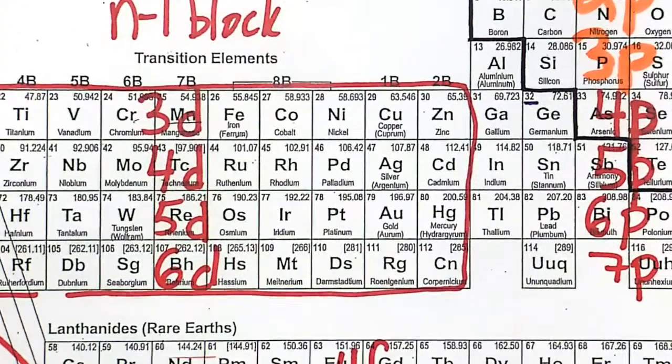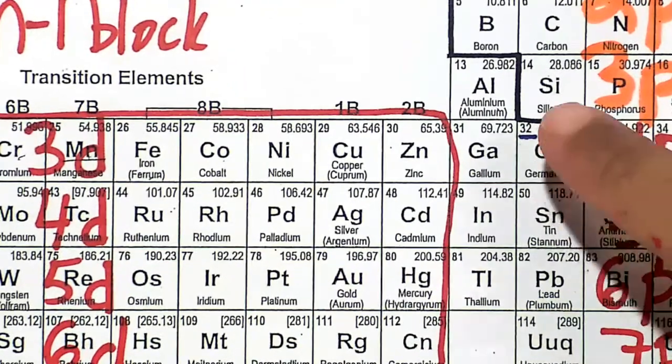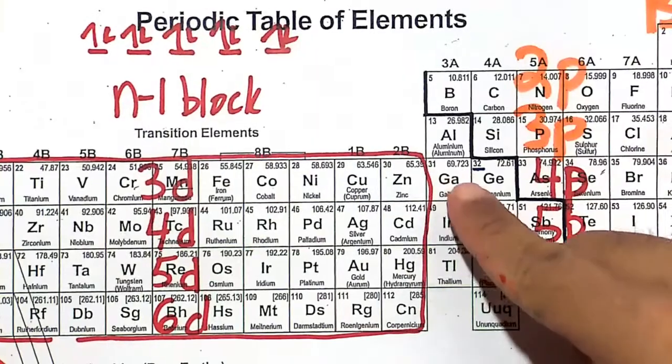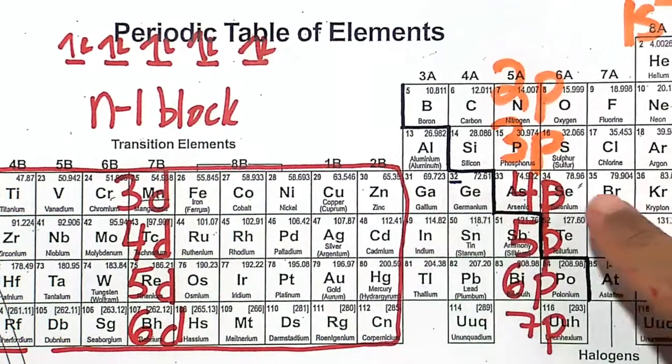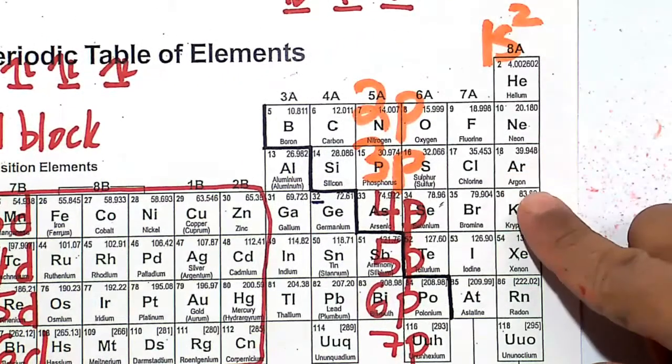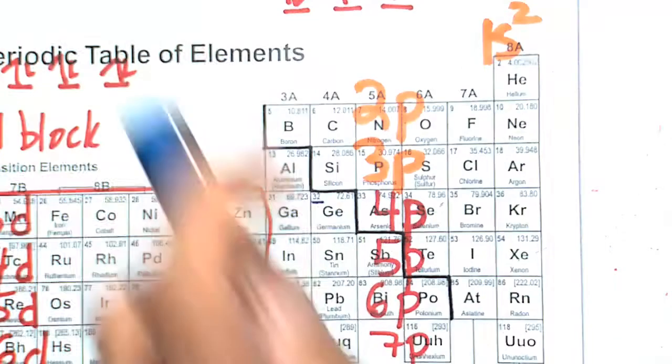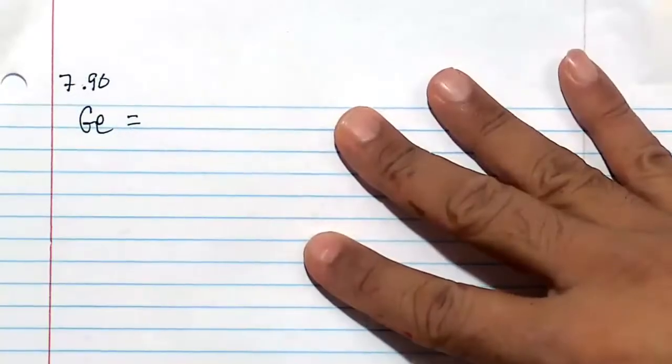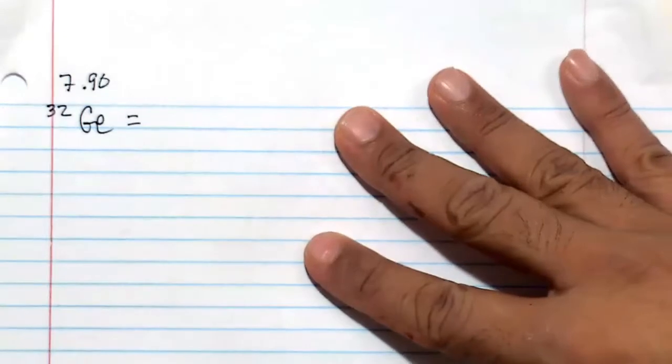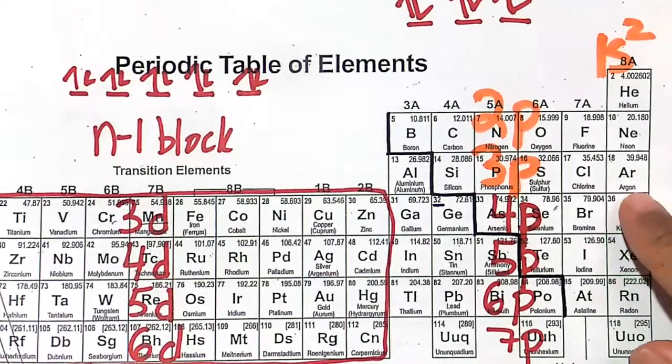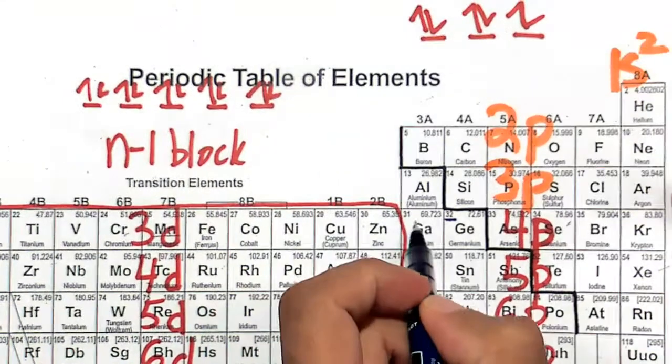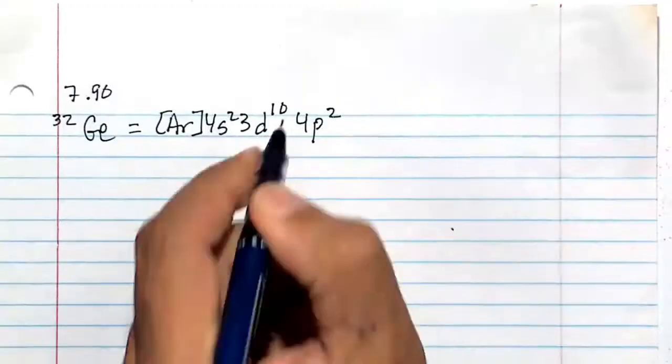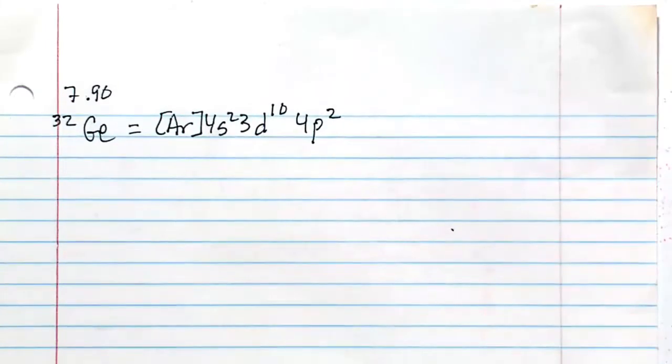Now that we know that, we can figure out the electron configuration of germanium. So let's look at germanium here. We got 32 electrons. Out of those 32 electrons, 18 electrons are going to go to argon. For germanium, we have 32 electrons, and 18 are going to come from argon. After argon, we go to 4s2, 3d10, 4p2. And that would be the electron configuration of germanium.